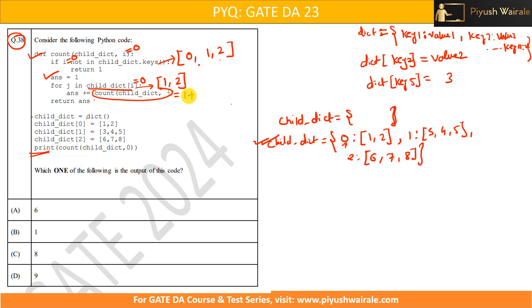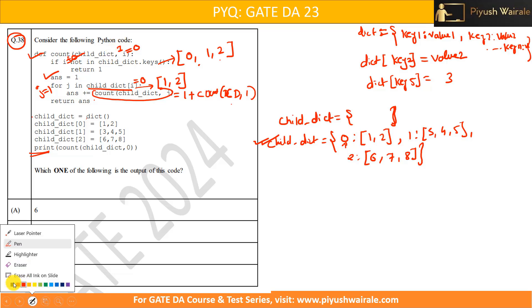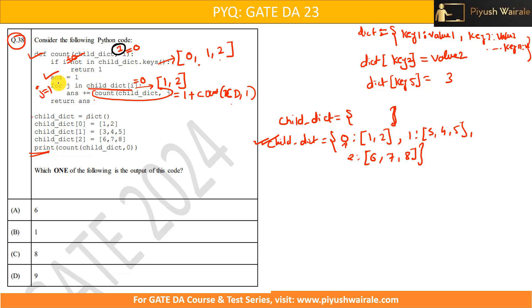So again we are calling this particular function here. This will be count(cd, j). The value of j for the first iteration is 1, because we are iterating over the list [1, 2]. So for the first iteration the value of j is basically 1. Now, the input will be taken by this dictionary and the value of i is basically 1 now for the next recursive call. The value of i is 1 here. Again we are checking if i not in the list — but 1 is in the list. So we are not going to return 1. Then we have ans equals to 1. Then for j in child_dictionary[1], and child_dictionary[1] contains [3, 4, 5].